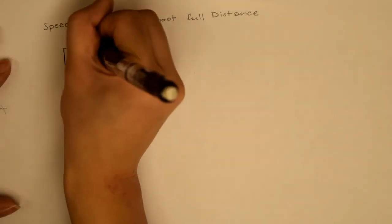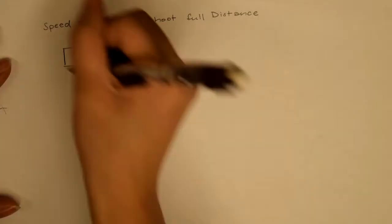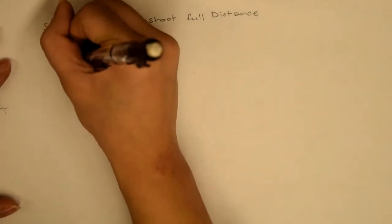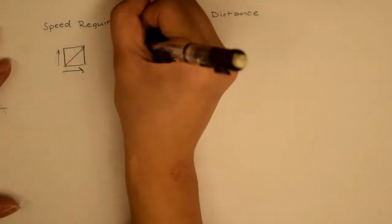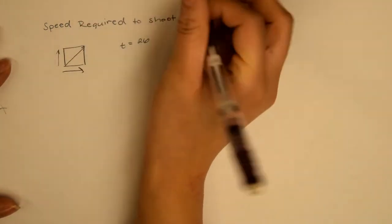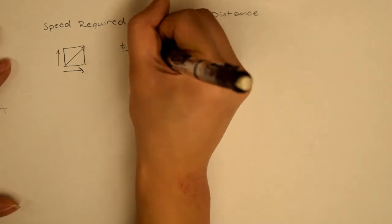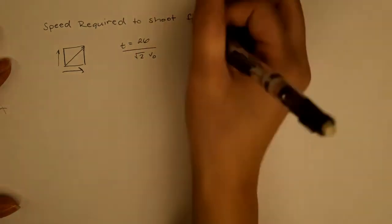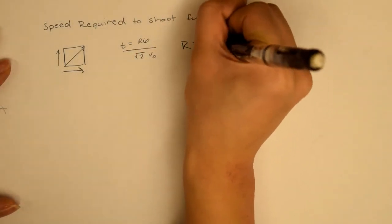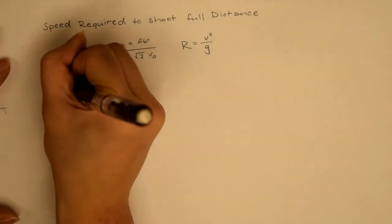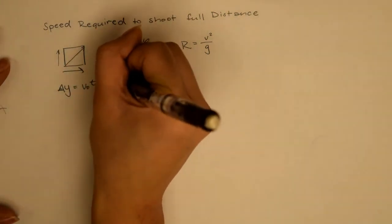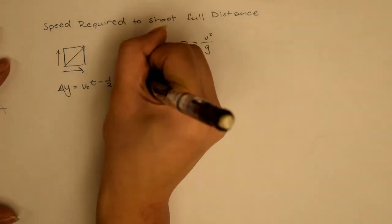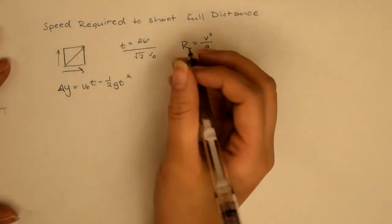Now it's possible to find the speed required to shoot the full distance of our 12x12 arena. First, you need to set up a time equation and a range equation that you can plug in later. Again, taking the kinematics equations, it is possible to find the speed that you need to shoot your flywheel at in order to reach full court.